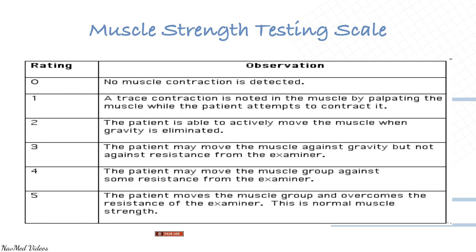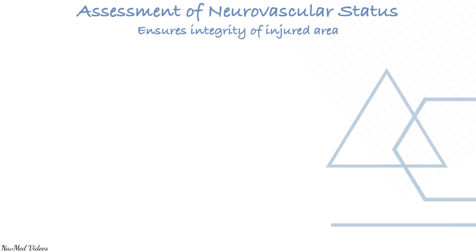Grade 2: the patient is able to actively move the muscle when gravity is eliminated. Grade 3: the patient may move the muscle against gravity but not against resistance. Grade 4: the patient is able to move the muscle against some resistance from the examiner but is less than normal. Grade 5 is normal.